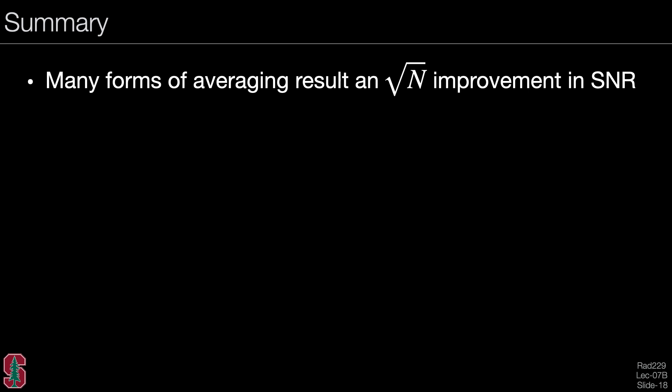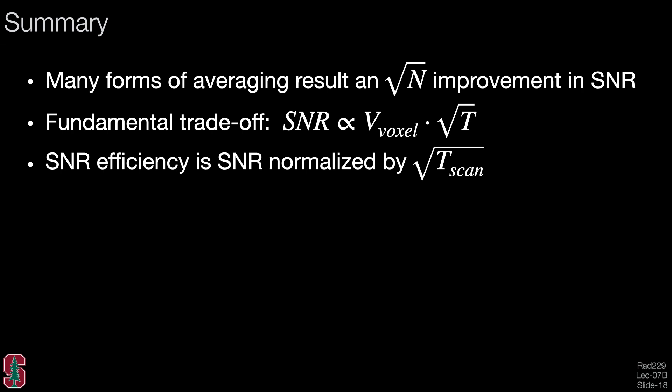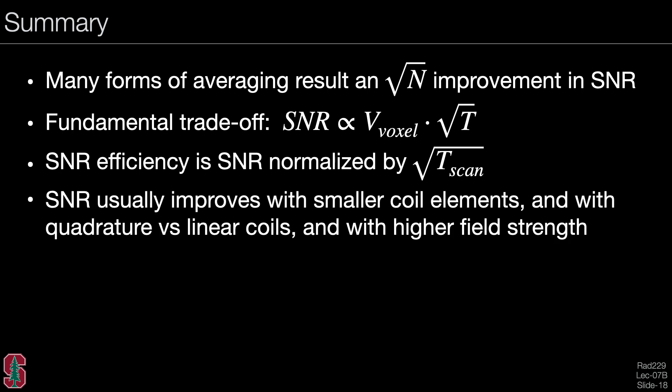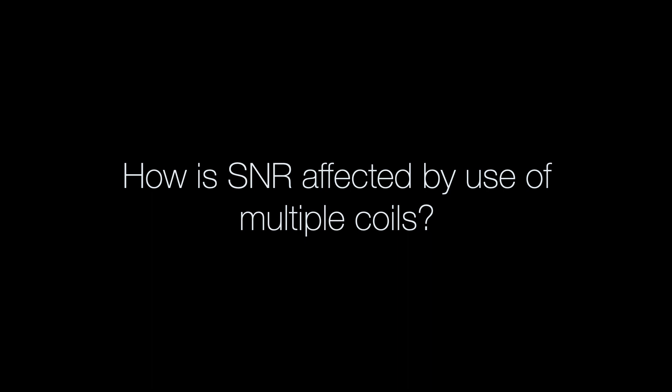In summary: there are many forms of averaging that result in a square root of N improvement in SNR. There is a fundamental SNR trade-off where SNR is proportional to the voxel volume times the square root of the acquisition time. SNR efficiency is SNR normalized by the square root of the scan time. SNR usually improves with smaller coil elements, with quadrature versus linear coils, and with higher field strength. SNR efficiency is reduced with non-uniform sampling. The next topic — how SNR is affected by multiple coils — will be covered in lecture 7c.